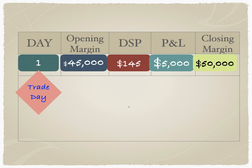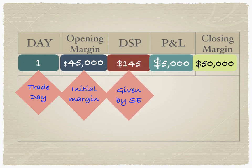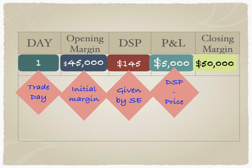To elaborate: trade day is the day of entering into the contract. The initial margin is the opening margin. The DSP — daily settlement price — is the price at which all banks and traders must mark to market their outstanding positions; this is given by the stock exchange. The P&L is a notional figure calculated as daily settlement price minus contract price. Since it's a short position, the result is a profit, and the closing margin is in the positive.